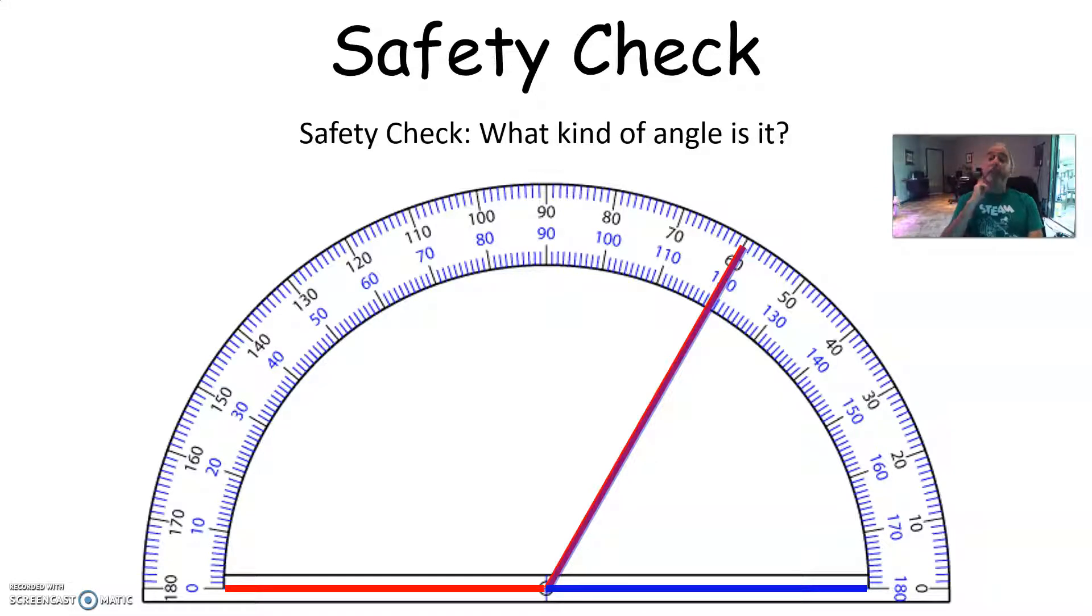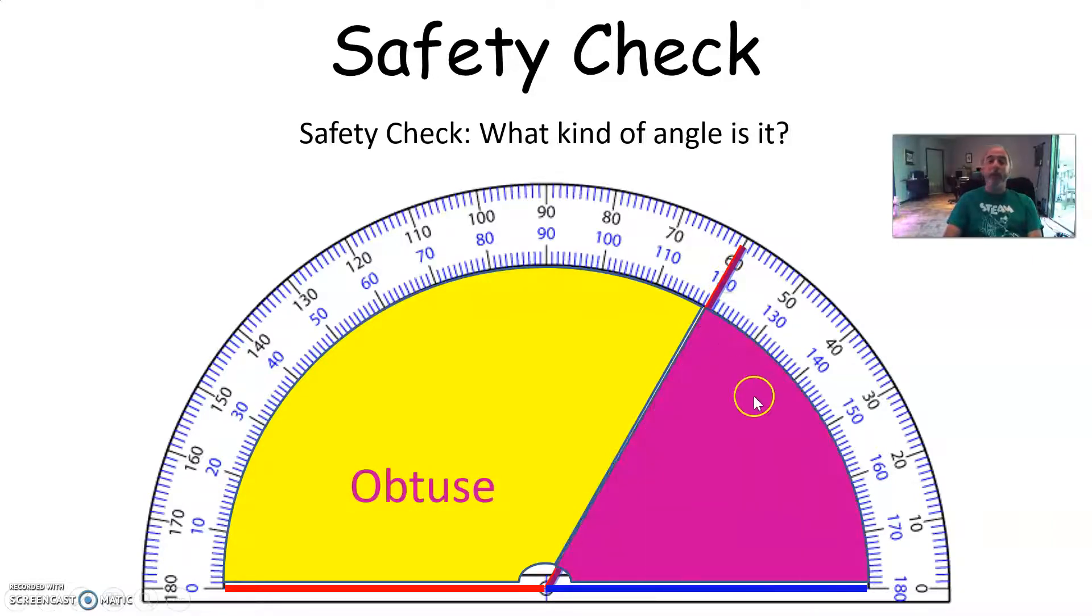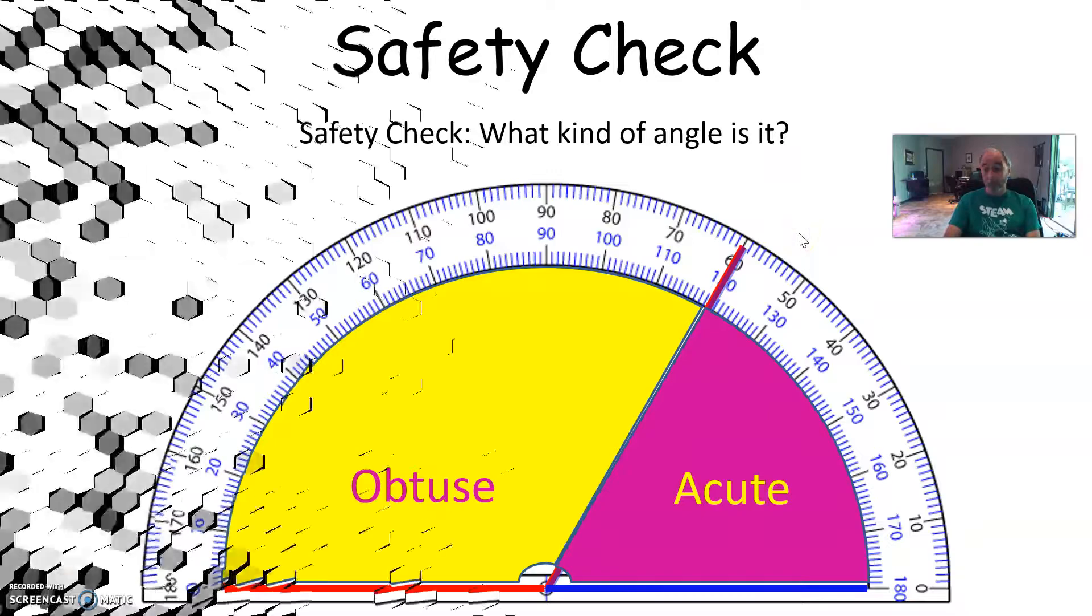Now, we have a safety check that we use as well. And we simply ask ourselves, what kind of angle is it? Is this an angle, or rather, is this angle an obtuse angle? Is this angle an acute angle? Is this angle a right angle? Is this angle a straight angle? All of these questions can be determined simply by looking at the angle. So this angle over here, this is a rather wide angle. Yes, you guessed it. It's an obtuse angle. So I've got two numbers to use, either 60 or 120. Well, being that this is an obtuse angle, I'm using 120. Does that make sense?